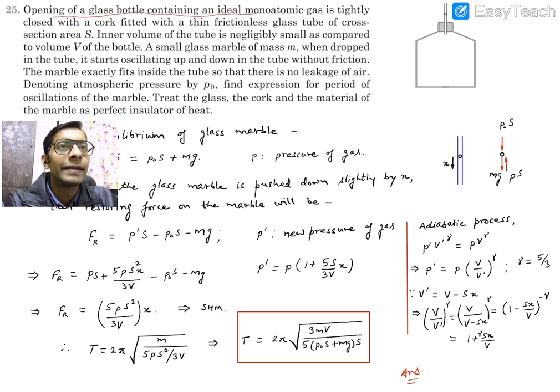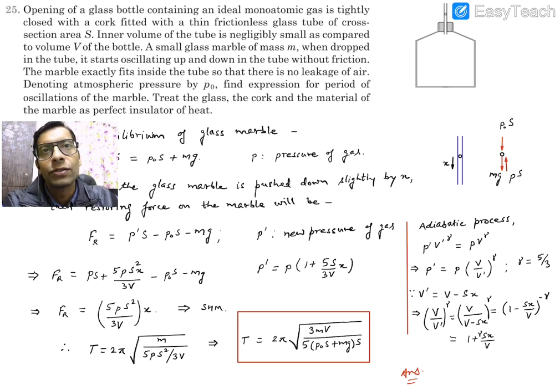Opening of a glass bottle containing an ideal monatomic gas is tightly closed with a cork fitted with a thin frictionless glass tube of cross-sectional area S. The inner volume of the tube is negligibly small as compared to the volume of the bottle, and that volume of the bottle is capital V.